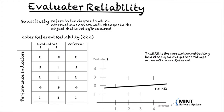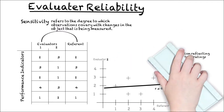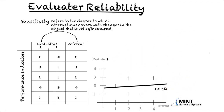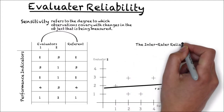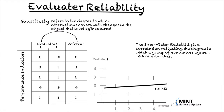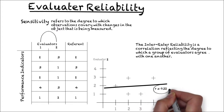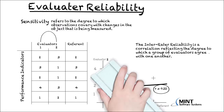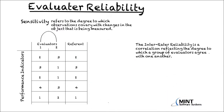The rater-referent reliability is one way to assess sensitivity — we compute the correlation between the referent grades as the true objective score with each evaluator. The second way to assess sensitivity is the inter-rater reliability, which is the most commonly used method and does not require a reference score. The inter-rater reliability is a correlation reflecting the degree to which a group of evaluators agree with one another. In our example, the inter-rater reliability between evaluator 1 and 2 is 0.22.